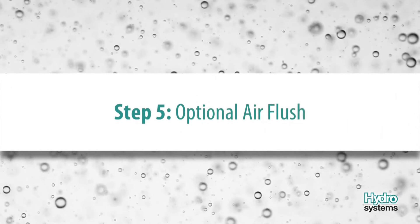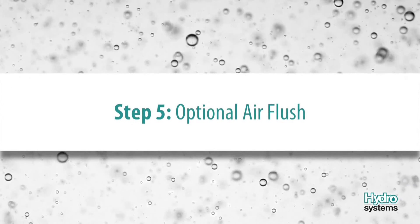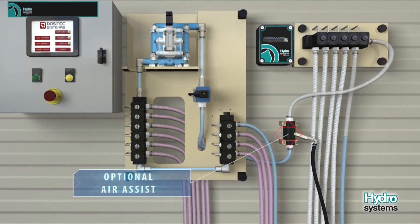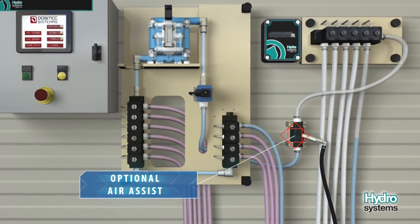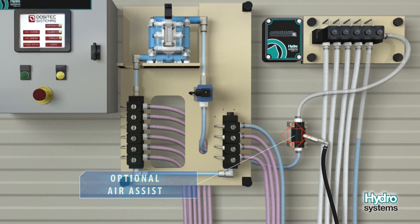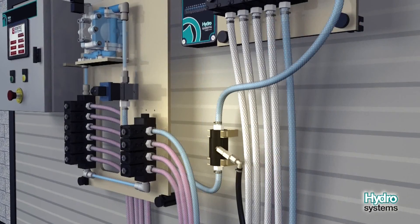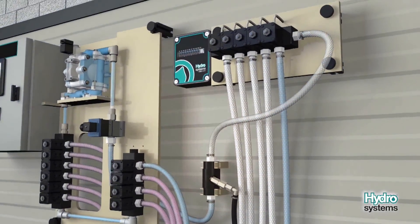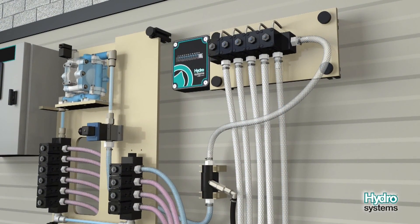Step 5: Optional Air Flush. In some instances, an optional air assist flush may be desired. The air assist module sends air through the lines to fully flush all of the chemical and water to the washer.